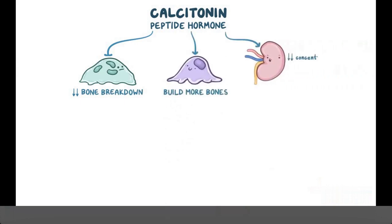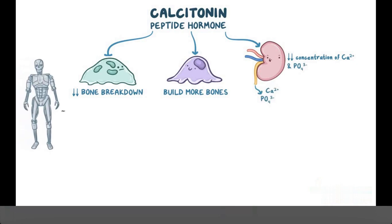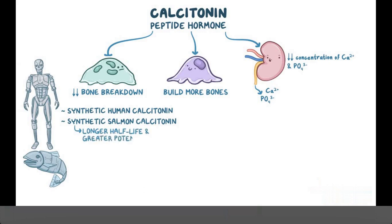Finally, it decreases the concentration of serum calcium and phosphate by increasing their excretion by the kidneys. There are two types of calcitonin: synthetic human calcitonin and synthetic salmon calcitonin, also known as salcatonin, which is more convenient due to its longer half-life and greater potency.